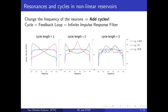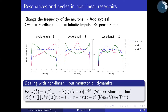A common objection: networks are non-linear, so how can you use filter concepts? The answer is that even though neurons are non-linear, they are monotonic — the more input, the more output. As long as monotonicity holds, cycles and feedback loops still produce resonant behavior. Long cycles are harder to implement due to saturation from non-linearities, but generally the idea works.